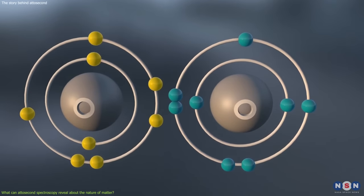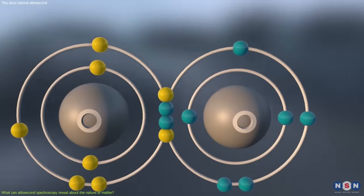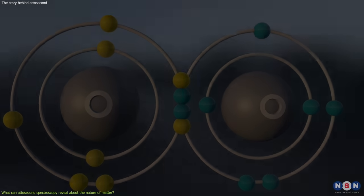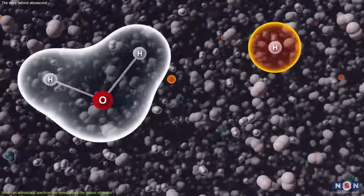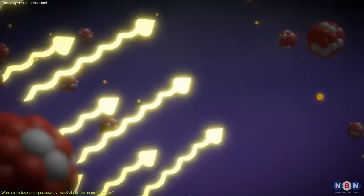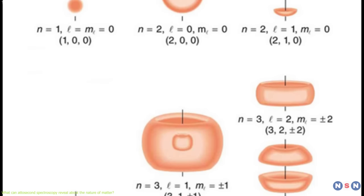It can also observe the formation and breaking of chemical bonds, which are the forces that hold atoms together in molecules. This can tell us how molecules react with each other and how they change their structure and properties when they are excited or ionized by light. Most importantly, it can control the quantum states of electrons and molecules, which are the possible configurations of their energy and angular momentum.